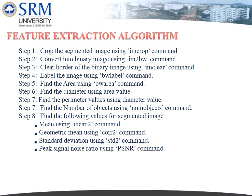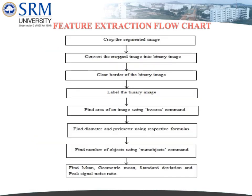The segmented image is converted into a binary image using the im2bw command. The border of the binary image is cleared using imclearborder, and the image is labelled using the bwlabel command. Area is found using the bwarea command, diameter is derived from the area value, and perimeter is calculated from the diameter. The number of objects is found using the numel command. Mean is computed using the mean2 command, geometric mean using the geomean command, standard deviation using the std2 command, and peak signal-to-noise ratio using the PSNR command.